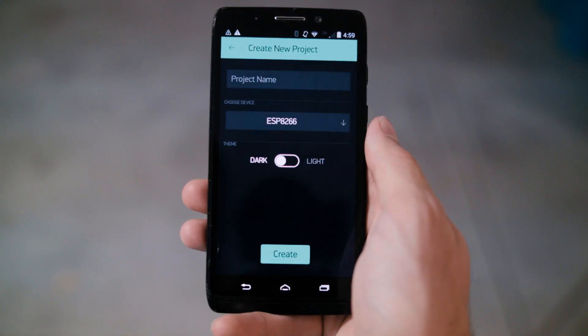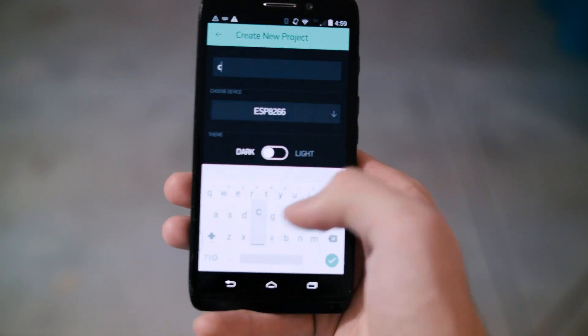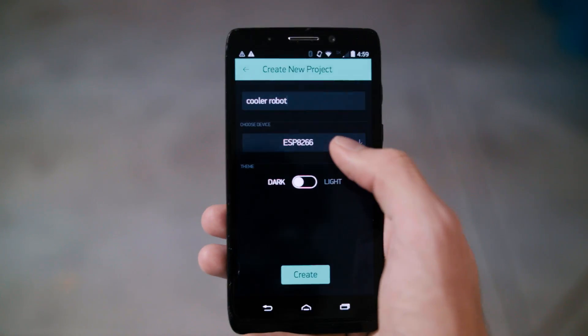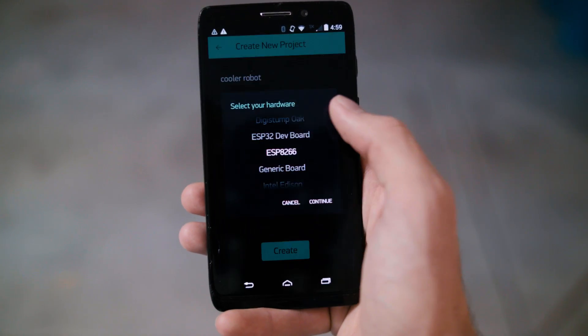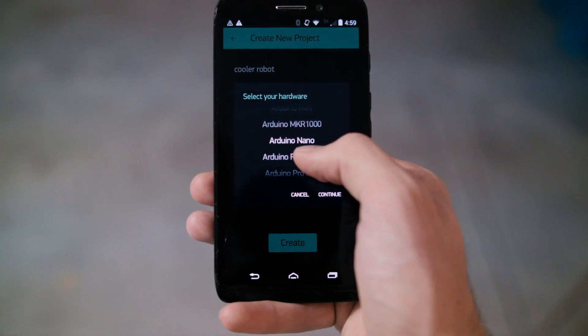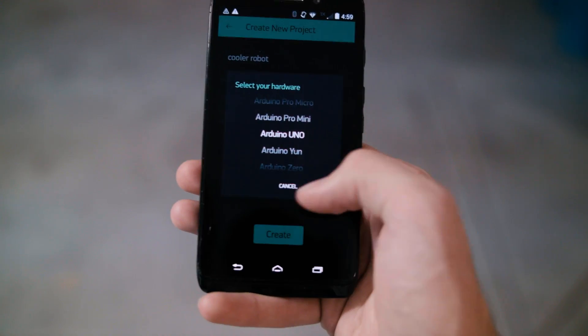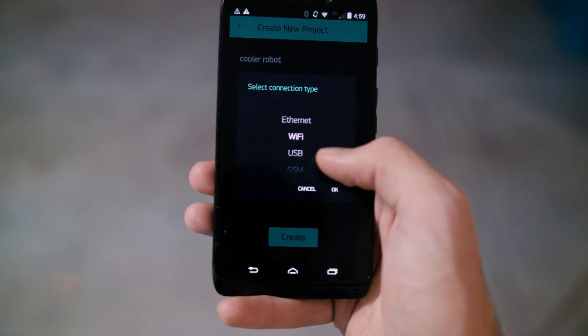Unfortunately this project only works for Android because the Bluetooth module we're using is only supported by Android. So I'm using an old Android device for this. I just gave it a name and select the Arduino Uno as the chip that I want to use.